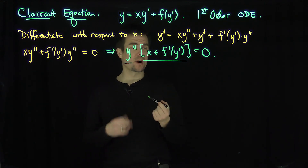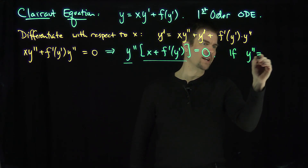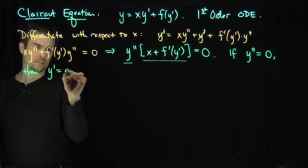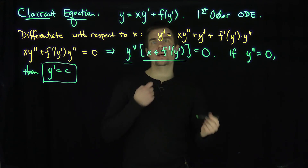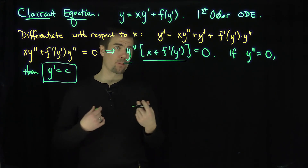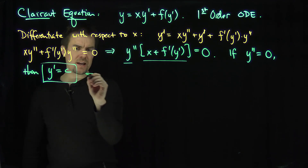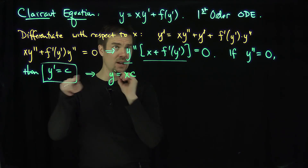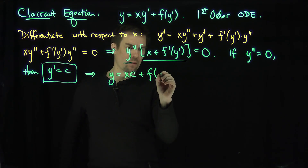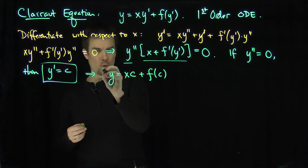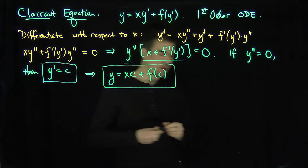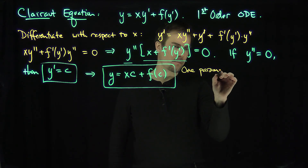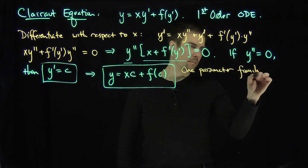There are two ways to solve this factored equation. We can have y'' equal to 0, or we can have x plus f' of y' equal to 0. The easiest situation is when y'' equals 0. If y'' equals 0, then y' is a constant c. Looking back at the Clairaut equation, y equals xy' plus f of y', and substituting y' equals c gives y equals xc plus f of c. This is a one-parameter family of lines.